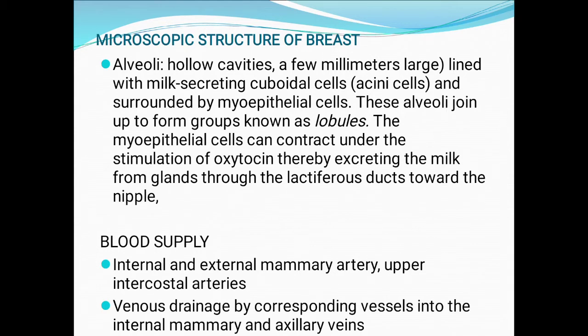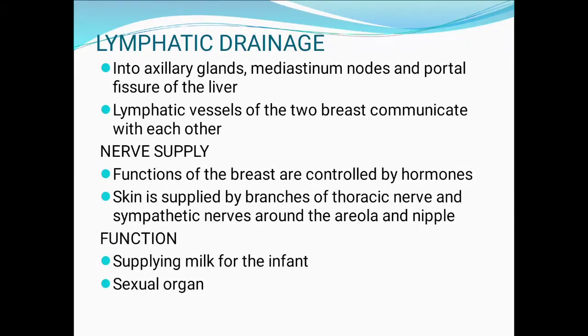Blood supply: internal and external mammary arteries, upper intercostal arteries. Venous drainage by corresponding vessels into the internal mammary and axillary veins. Lymphatic drainage: into axillary glands, mediasternal nodes, and portal fissures of the liver. Lymphatic vessels of the two breasts communicate with each other. Nerve supply: function of the breast is controlled by hormones; skin is supplied by branches of the thoracic nerve and sympathetic nerve around the areola and nipple.